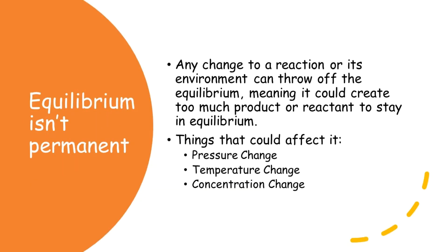However, equilibrium isn't permanent. Any change to a reaction or its environment can throw off equilibrium, meaning it could create too much product or reactant to stay in equilibrium. Things that could affect it include a pressure change, a temperature change, or a change in concentration of products or reactants.